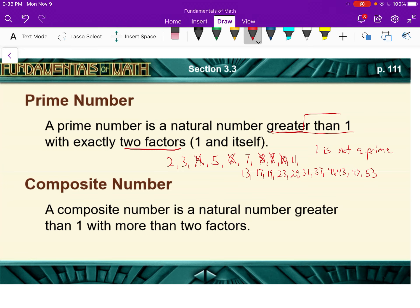A composite number, then, is a natural number greater than 1 with more than 2 factors. So the ones that I crossed out here and the ones that I skipped are called composite numbers.